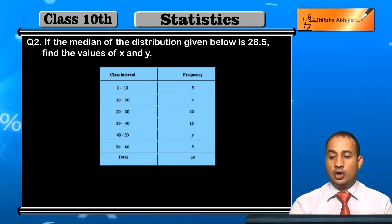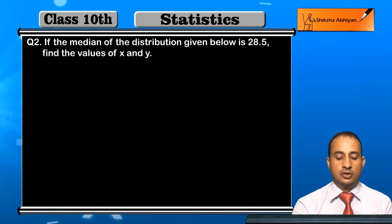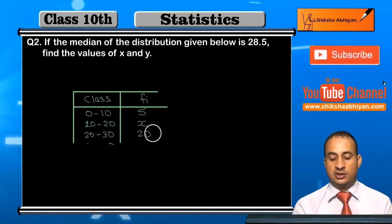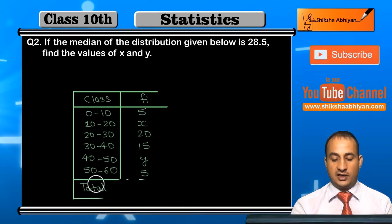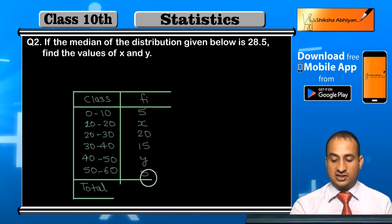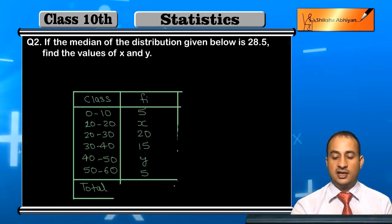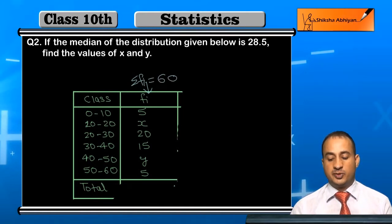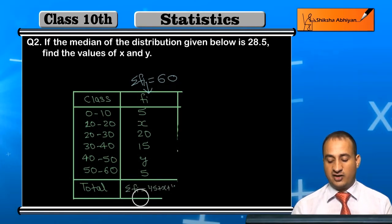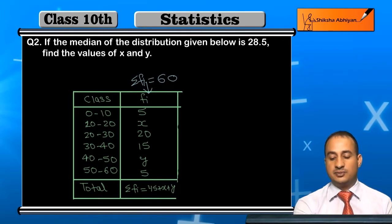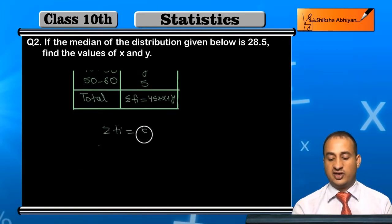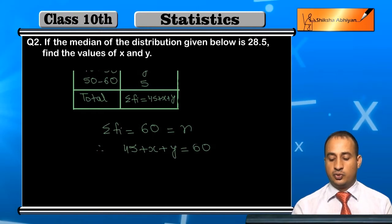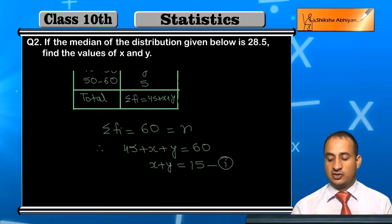So first of all, I write down the given data. The sum of frequencies: 5 + x + 20 + 15 + y + 5 = 45 + x + y. Since sigma f_i = 60 (which is n), we get 45 + x + y = 60, which gives x + y = 15. Let this be Equation 1.